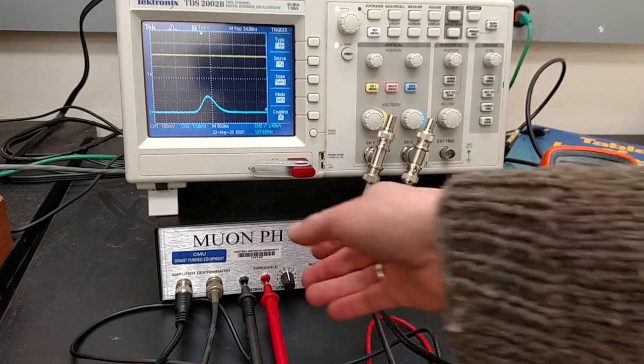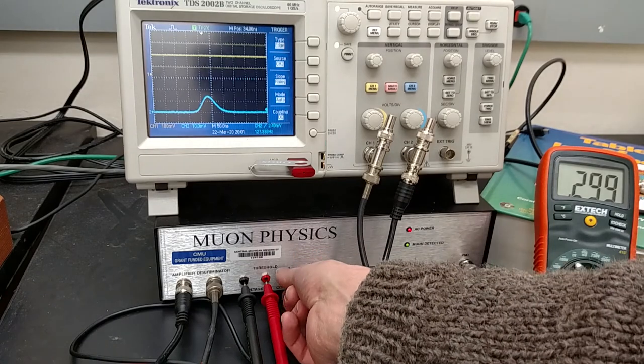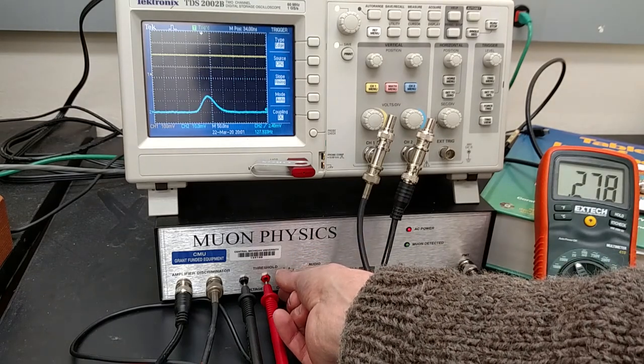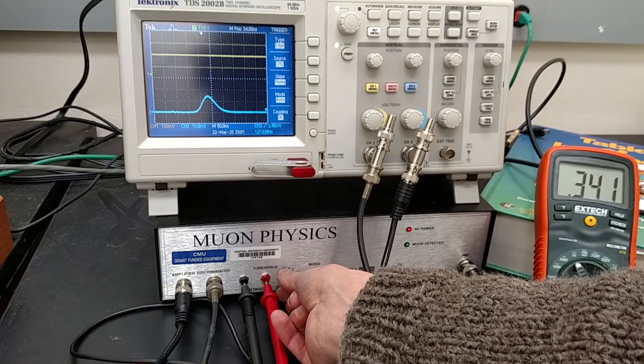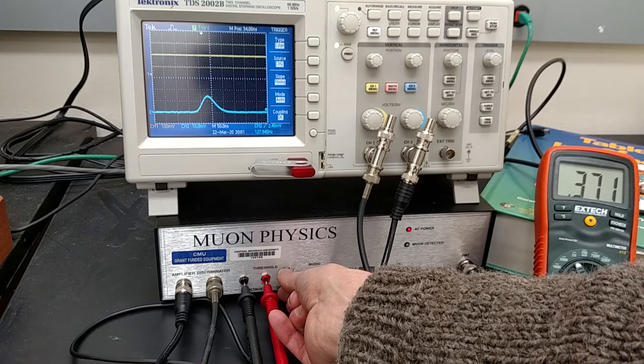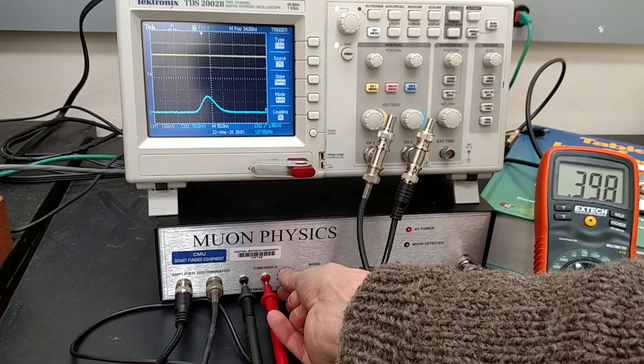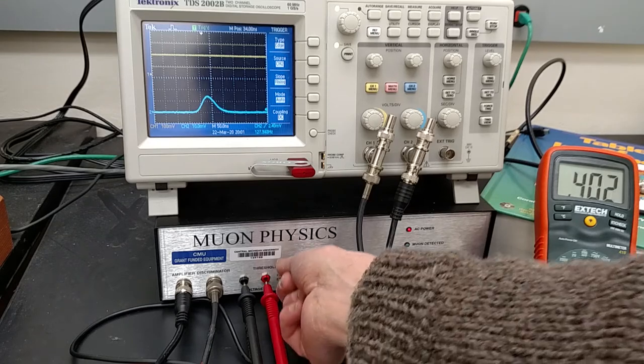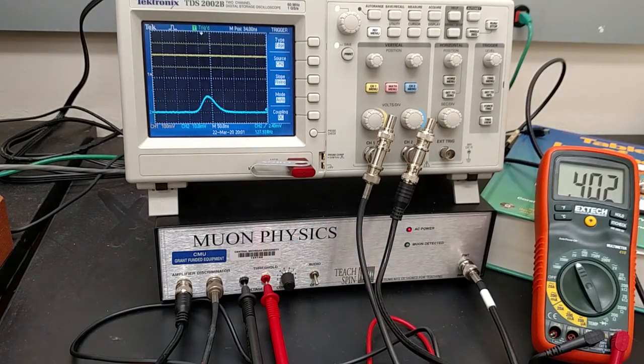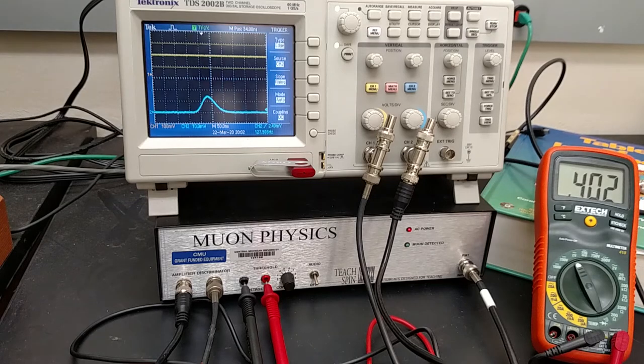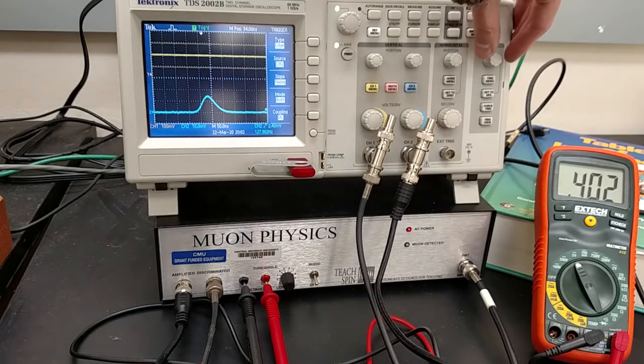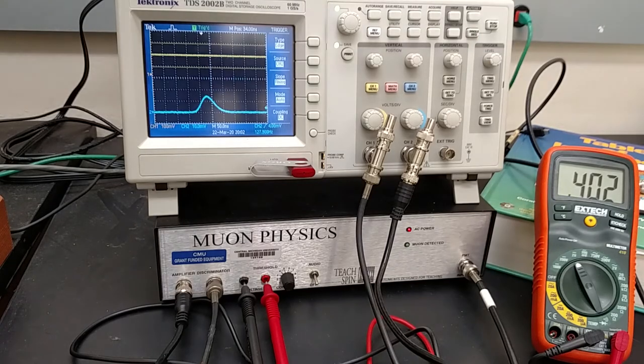But we could of course also increase the threshold, and we put it at 400 millivolts—at least that is what the monitor shows. What it corresponds to really, that's kind of not a simple thing to determine. But at 400 millivolts now there is no signal.